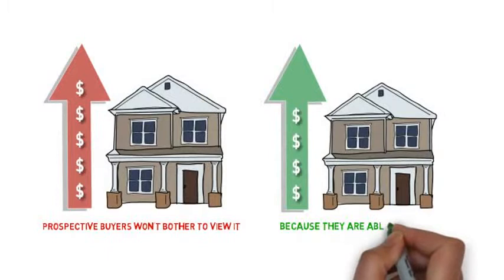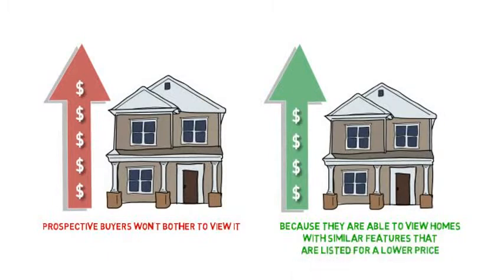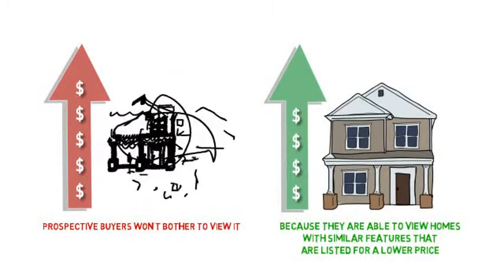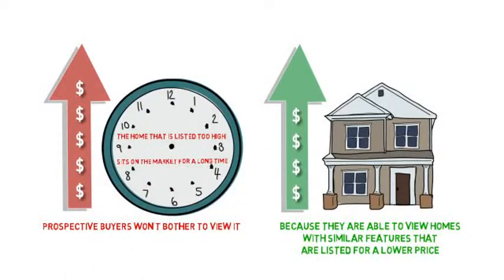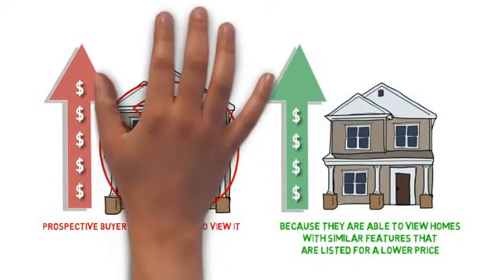Why? Because they are able to view homes with similar features that are listed for a lower price. As a result, the home that is listed too high sits on the market for a long time, causing prospective buyers to assume there is something wrong with it.